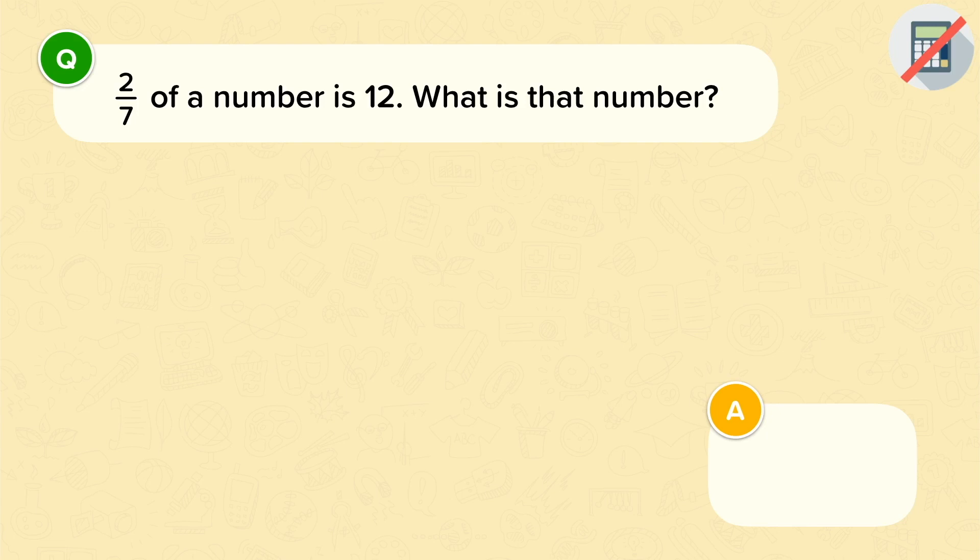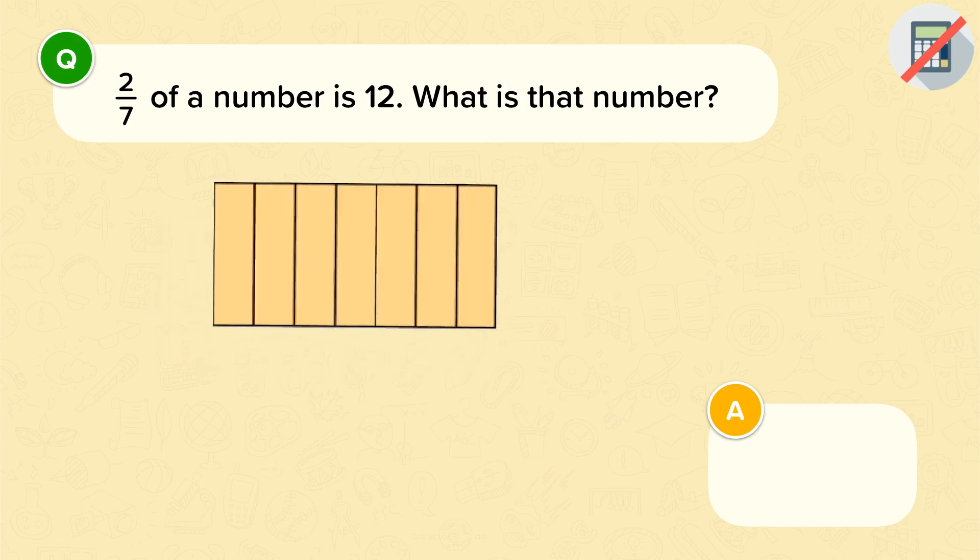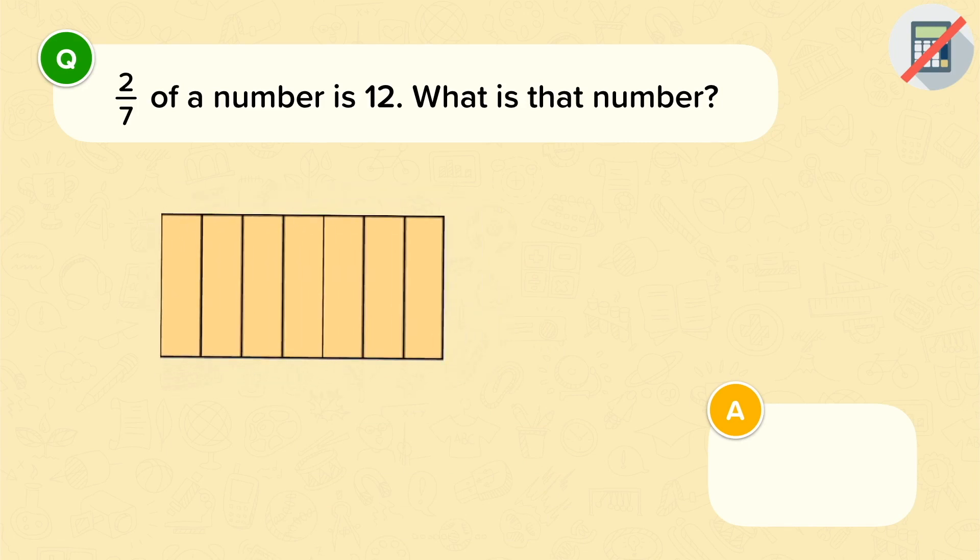So I'm going to use a diagram to explain. So this model represents the whole number, and we're told that 2 sevenths of that number, 2 sevenths, is equal to 12, and we want to find out what the whole number is.